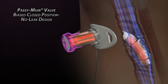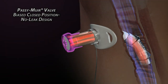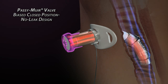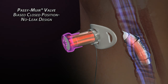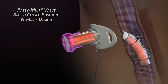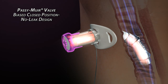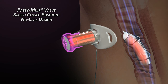As exhalation begins, the valve is already closed, and air immediately follows the path of least resistance up through the trachea and past the vocal folds, exiting through the nasal cavity and mouth. Because the valve closes at peak inhalation, a column of air remains in the tracheostomy tube at all times, creating resistance to secretions entering the tracheostomy tube and the valve.